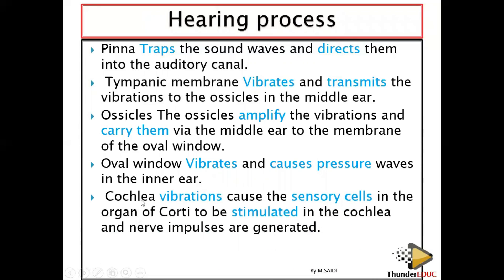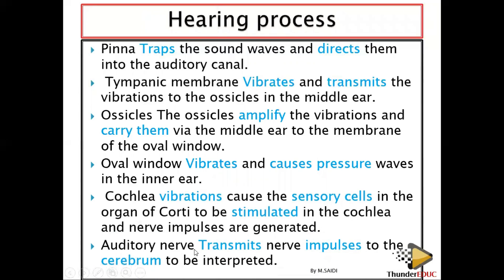The cochlea inside the inner ear vibrates, and the sensory cells in the organ of Corti are stimulated. This means they change the vibration into a nerve impulse. The impulse is then sent to the brain via the auditory nerve.